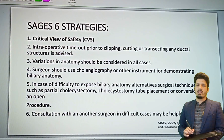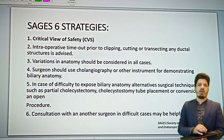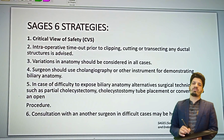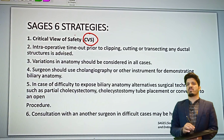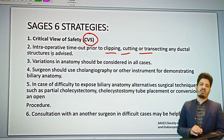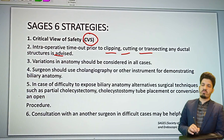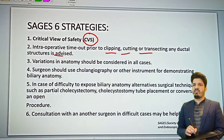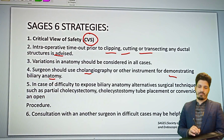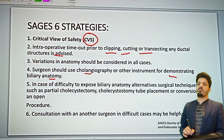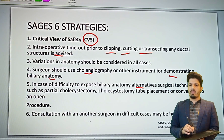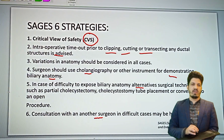The SAGES six strategies for safe laparoscopic cholecystectomy: first, you must achieve the critical view of safety. Second, have an intraoperative timeout prior to clipping, cutting, and transecting any ductal structures. Third, recognize variation in anatomy. Fourth, consider cholangiography or other instruments to demonstrate biliary anatomy. Fifth, in cases of difficult biliary anatomy exposure, use alternative surgical techniques — the bailout strategies. Sixth, consult a second opinion.